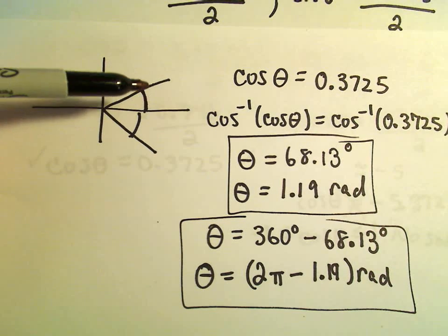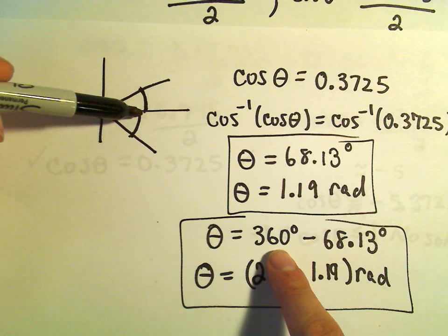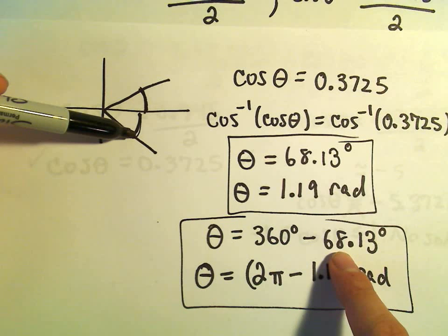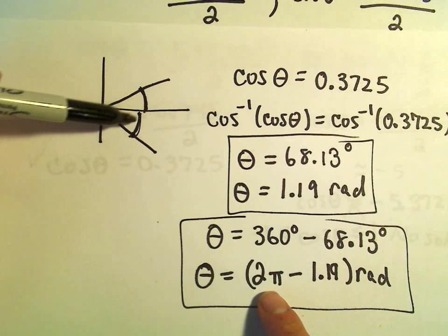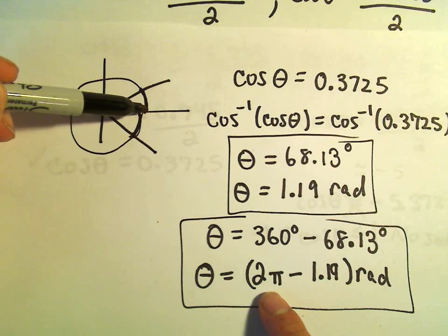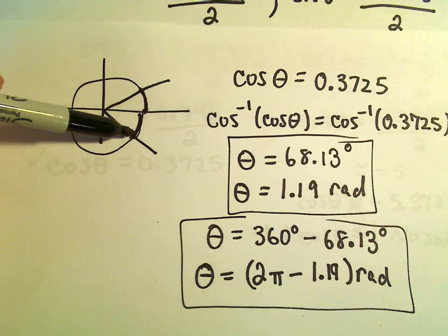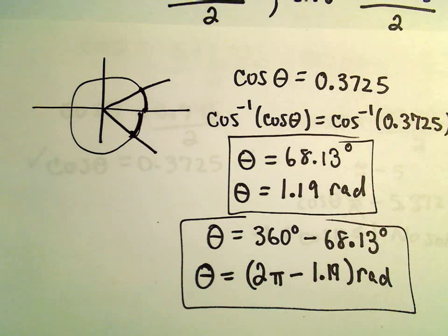What are we going to do? Well, one trip around is 360. You'd have to subtract that angle, 68.13 degrees. And equivalently, if you go all the way around, that'll be 2 pi. Subtract the 1.19 radians, and that's how you'll get the second solution.